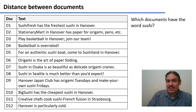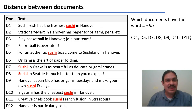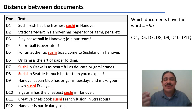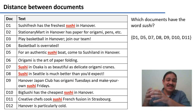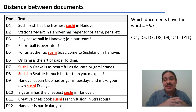Which of these documents have the word sushi? Documents D1, D5, D7, D8, D9, D10, and D11 have the word sushi. Some of them like D1 and D5 are about places where you can get sushi in Hanover — fresh sushi or authentic sushi, for example. Some like D7 and D8 are about places that are not Hanover where you can get sushi, such as Osaka and Seattle. So sushi could be a feature to describe the documents.